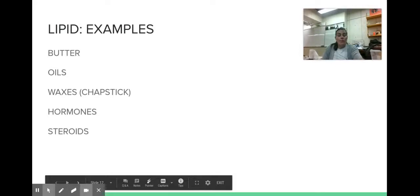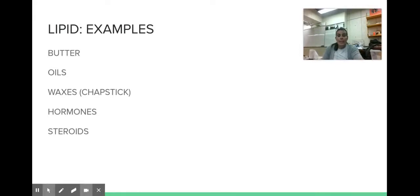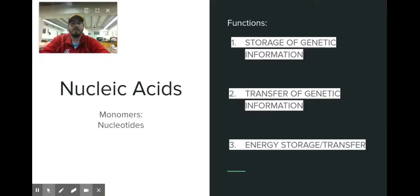Here's a whole bunch of examples. So some foods we eat, things like butters and different types of oils. Waxes is a good example of a lipid. I know we don't eat waxes, but something like chapstick is made out of wax. So when you put that chapstick on your lips, it forms a protective barrier to keep your lips from drying out. It really keeps in that moisture. And then some different compounds we have inside our body that you've probably heard of. Things like hormones and steroids are examples of lipids.